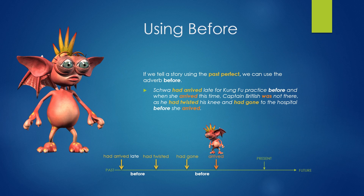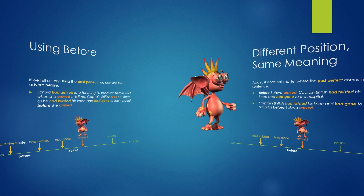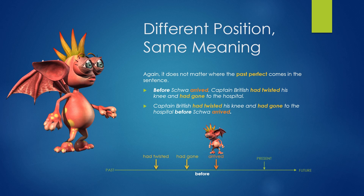Using Before. If we tell a story using the past perfect, we can use the adverb before. Schwa had arrived late for kung fu practice before, and when she arrived this time, Captain Britlish was not there as he had twisted his knee and had gone to the hospital before she arrived. Again, it doesn't matter where the past perfect comes in the sentence. Before Schwa arrived, Captain Britlish had twisted his knee and had gone to the hospital.